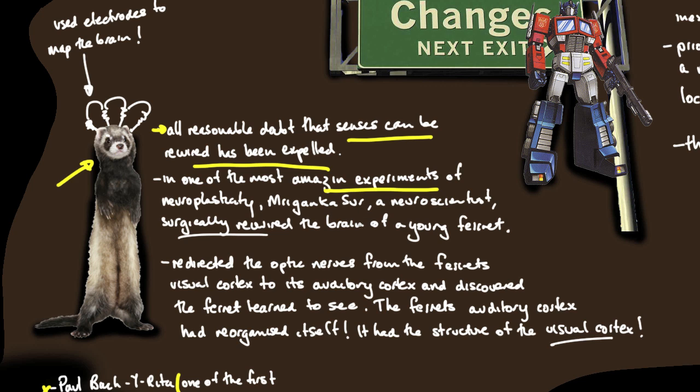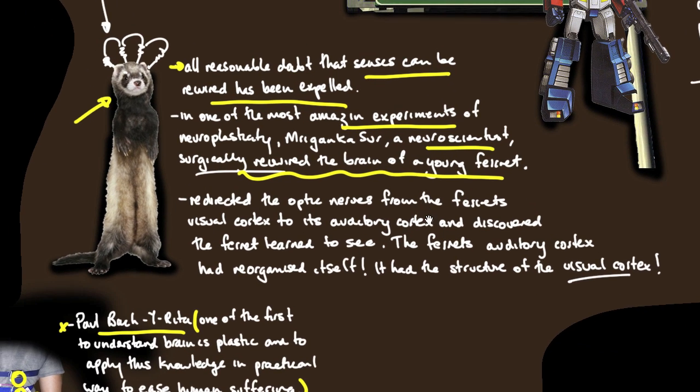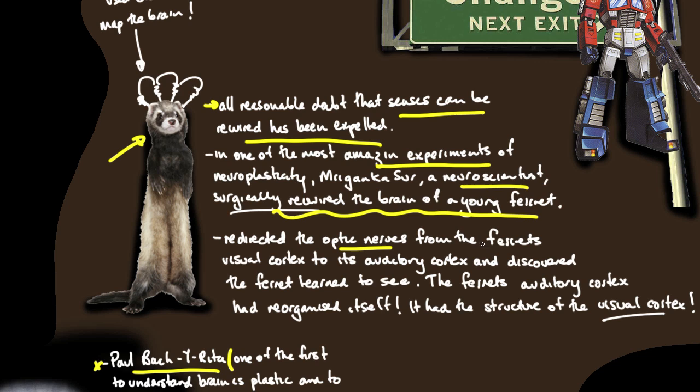They redirected the optic nerves from the ferret's visual cortex to its auditory cortex and discovered that the ferret still learned to see. The ferret's auditory cortex had reorganized itself and had the structure of the visual cortex.